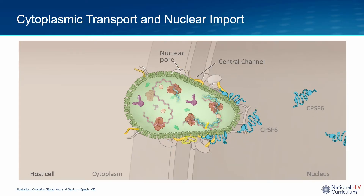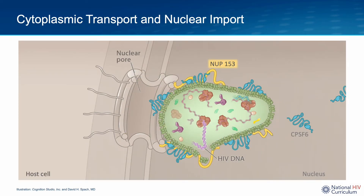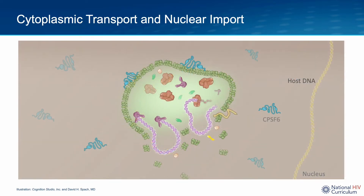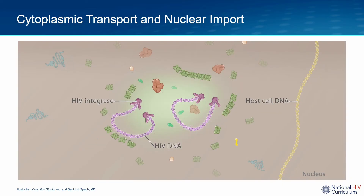As the HIV core begins to emerge into the nucleus, it binds with the host protein CPSF6 — cleavage and polyadenylation specificity factor 6 — which also assists movement through the nuclear pore. As the core advances further, it becomes more heavily coated with CPSF6 and begins to lose structural integrity. As the core exits the nuclear pore and fully enters the nucleus, there is major structural breakdown. Once completely inside, the HIV core undergoes further disassembly, releasing HIV DNA and HIV integrase enzyme, completing the cytoplasmic transport and nuclear import step.